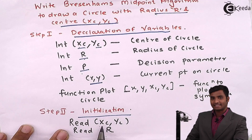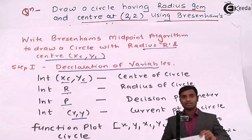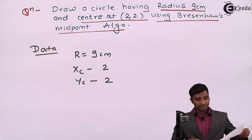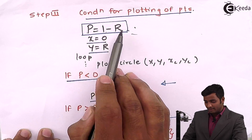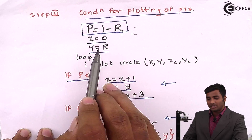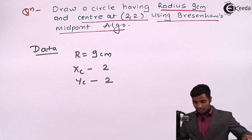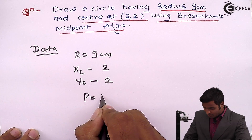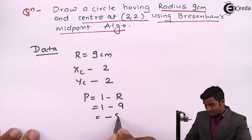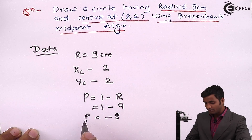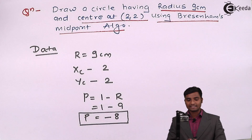We will initialize Xc, Yc and R in step 2, and in step 3 we will plot the first pixel. For plotting the first pixel, we use the relation P = 1 - R, where X value is 0 and Y value is radius. So P = 1 - R = 1 - 9, which gives P = -8.